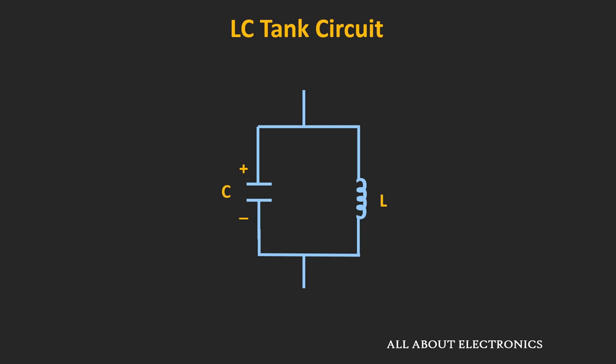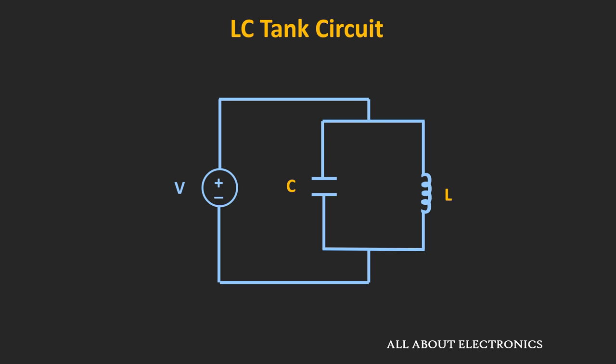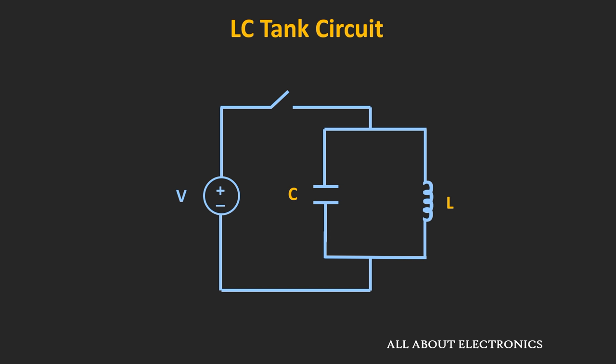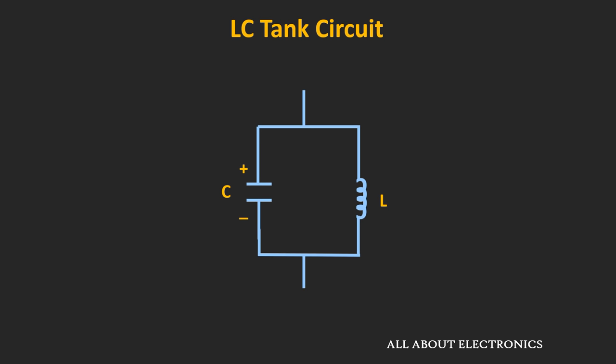Here we have an LC tank circuit. Let us assume that the capacitor is initially charged to some finite voltage — or that some finite voltage is applied to this LC tank circuit. Whenever that voltage is applied, the capacitor starts charging towards the supply voltage. And as soon as this capacitor is fully charged, let us say we disconnect the voltage supply. Then this capacitor starts discharging through the inductor.